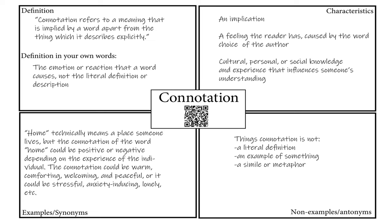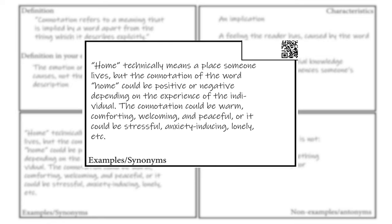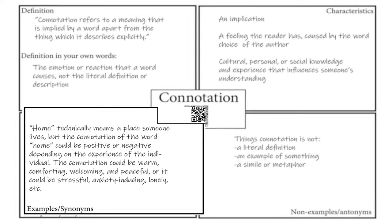From there we move on to the third quadrant, where students come up with examples or synonyms for the word. The example we chose here is the word "home," which technically means a place someone lives, but the connotation of "home" could be positive or negative depending on the individual's experience. The connotation could be warm, comforting, welcoming, and peaceful — or it could be stressful, anxiety-inducing, lonely, and so on. As students work in this third quadrant, they're further clarifying the concept and creating real-world examples, which is really going to help solidify their understanding.